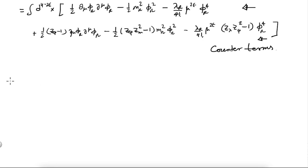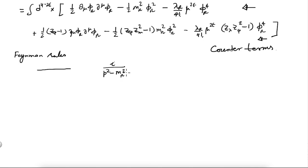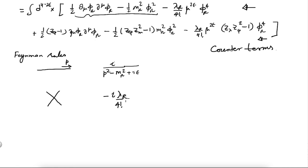The momentum-space Feynman rules are: the propagator is i/(p²−m_r²+iε), because the renormalized mass m_r appears here. Then as earlier you have the four-point vertex which gives a factor of −iλ_r over 4!. And then you have a two-point counter-term vertex, which we call a vertex because z_φ−1 is of order λ_r.